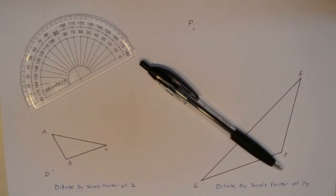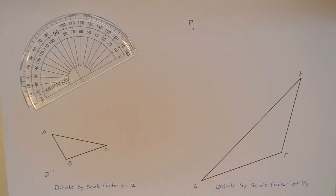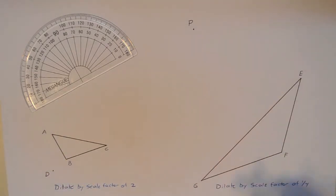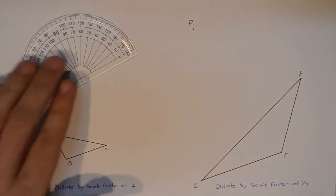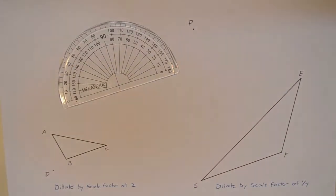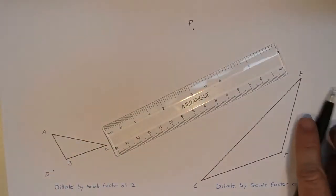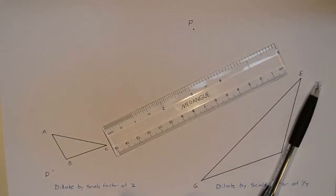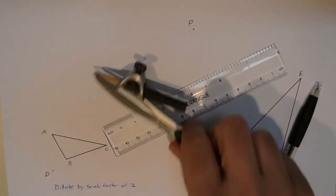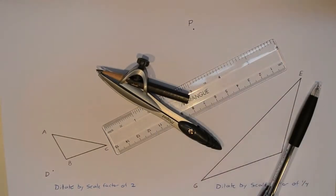Hey everybody, this is Mr. A. Welcome back to another episode of Mr. A's Math Podcast. In today's episode I want to talk with you about dilations, specifically constructing dilations on the plane. You're going to need a straight edge and a compass, and a couple of pens - I like to use a few different colors.